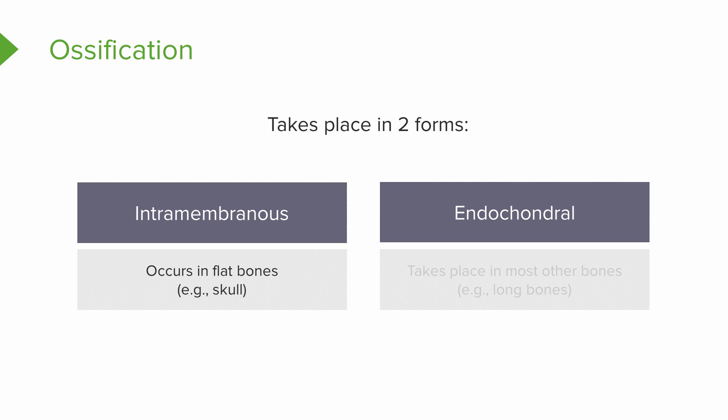Intramembranous ossification is usually associated with the formation of the flat bones, like those in the skull. Whereas endochondral ossification is usually associated with the formation of the other bones in the body, and specifically the long bones.